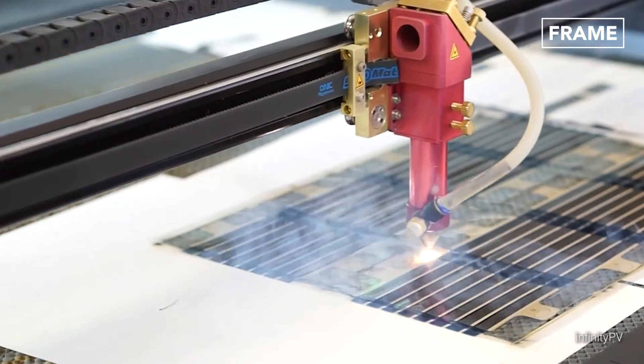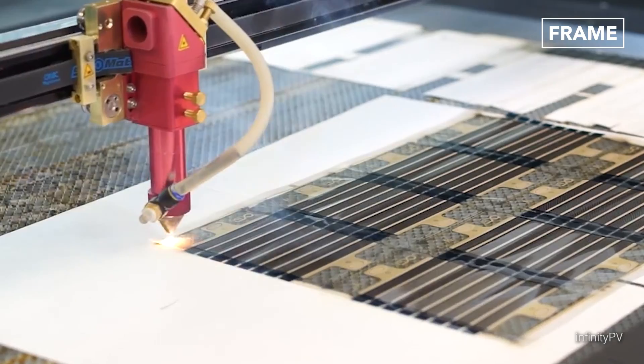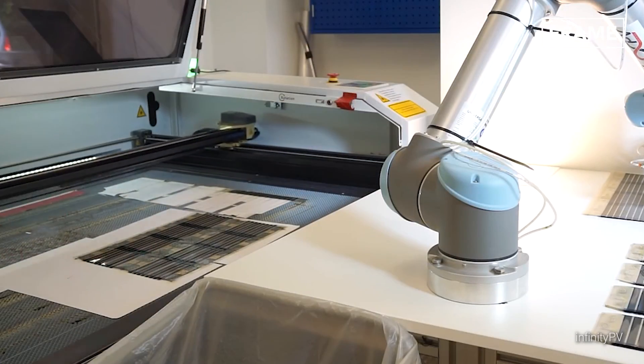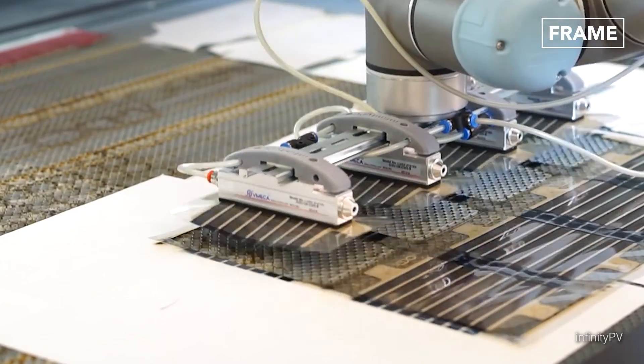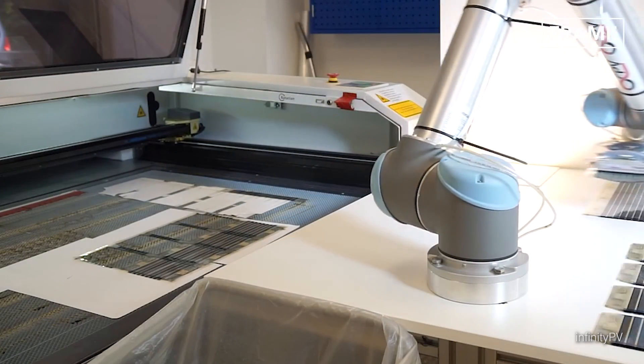Whether transparent or opaque, the panels are printed in multiple layers, which include the conductor material, two electron transport layers, an active layer, and a silverback electrode layer.